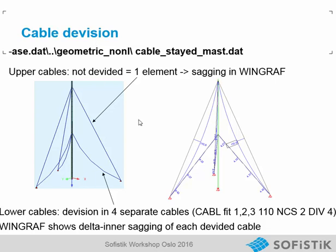Cable division. Here I have an example where the long cable is not divided — only one element — and the lower cables are divided by 4 cable elements with nodes in between. In the animator, we see the deformation of the nodes. And in WinGraph, we can look at the cable sagging. The long cable has a sagging that we can see in WinGraph, and for the small cables we see the sagging of the segments.